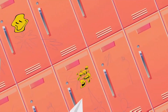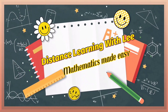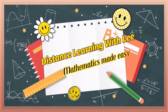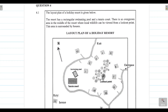Without any further ado, let's get started with today's video tutorial. We're tackling Question 4.1, which deals with the layout plan of a holiday resort. The resort has a rectangular swimming pool and a tennis court. There is also an overgrown area in the middle of the resort where local wildlife can be viewed from a lookout point.